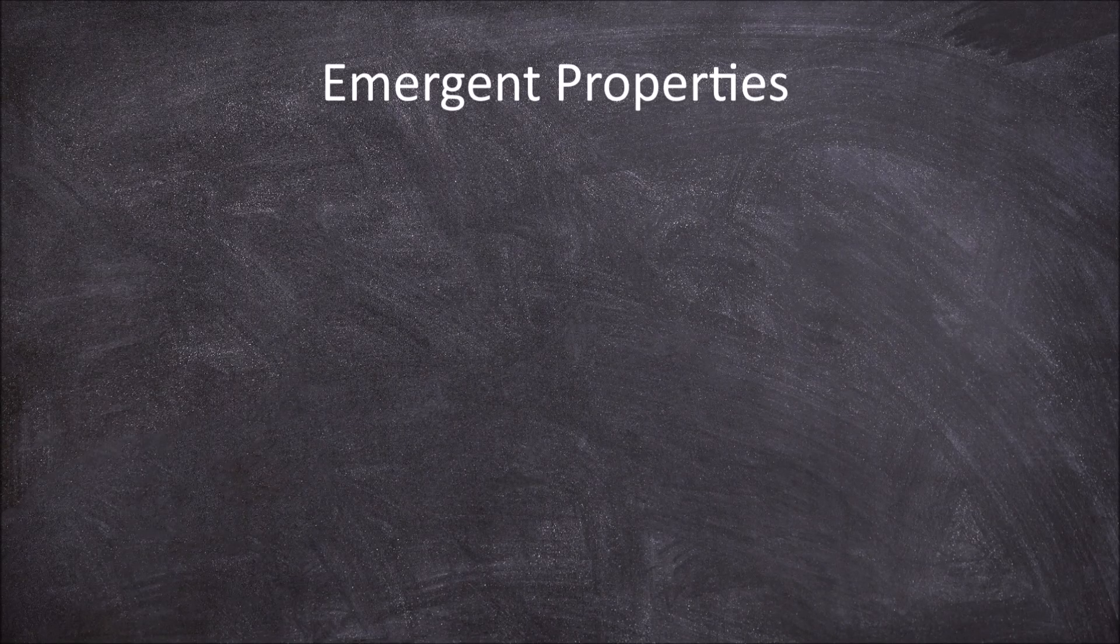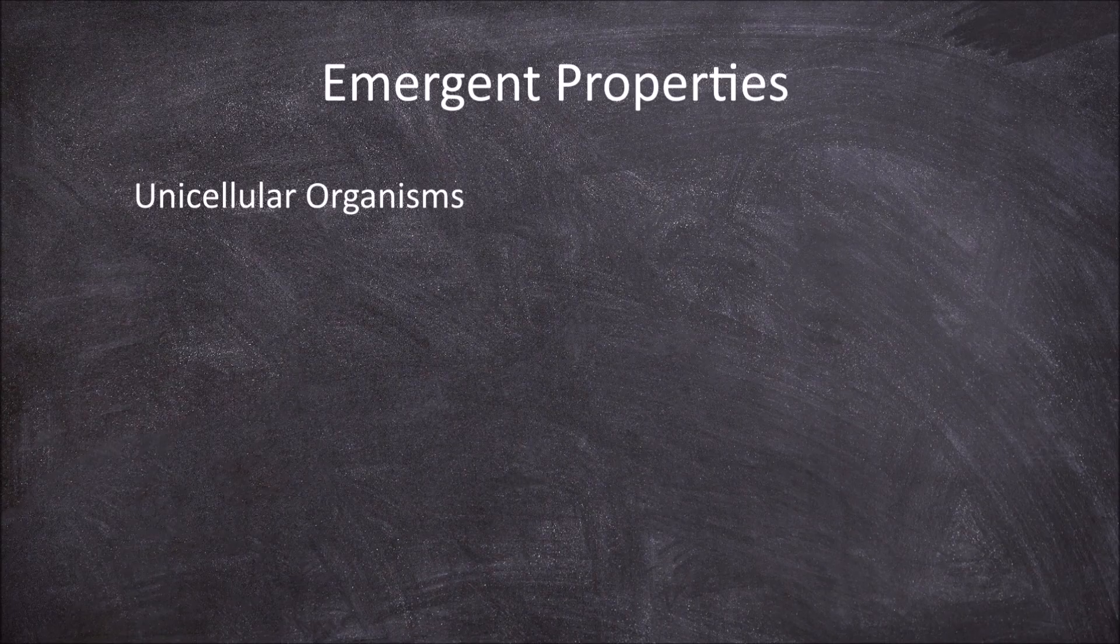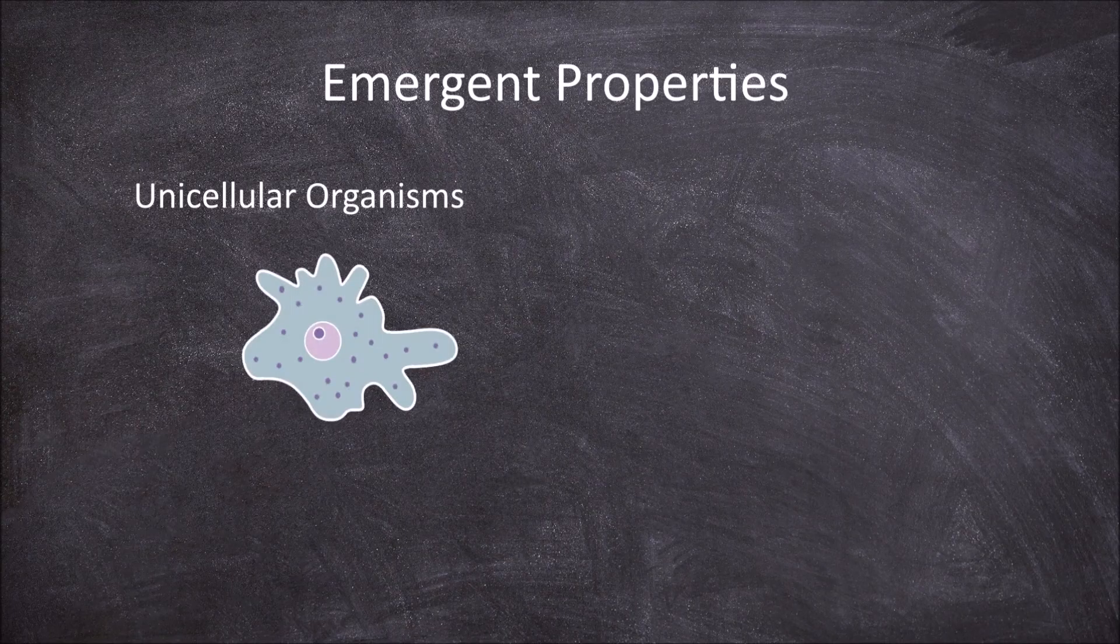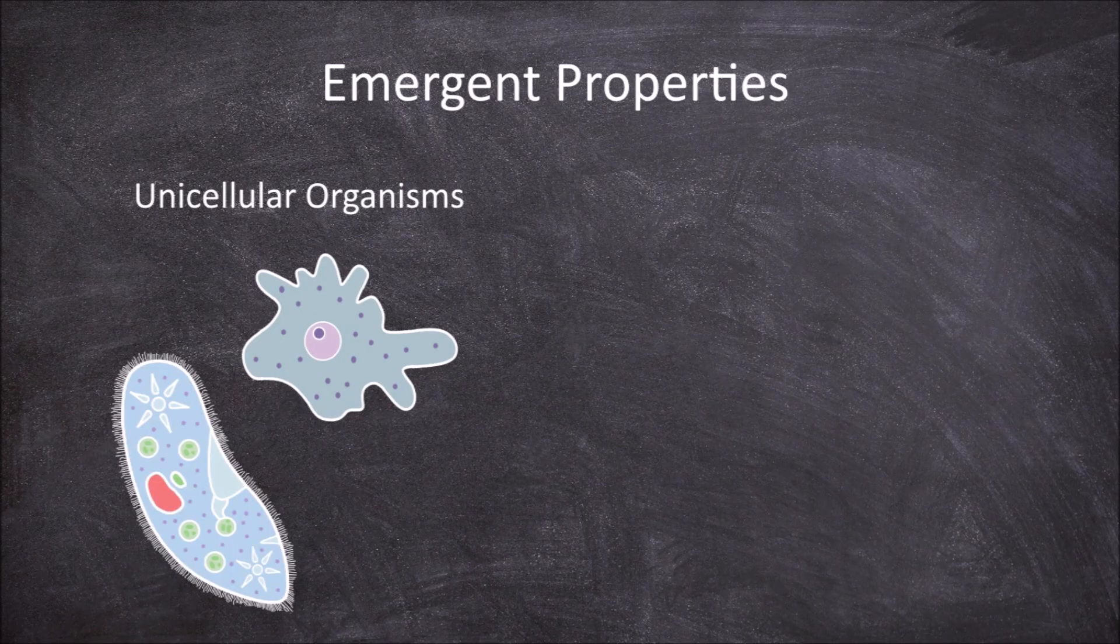In this video we're going to take a look at emergent properties. A unicellular organism is an organism that consists of only a single cell, such as an amoeba, paramecium, and bacteria.